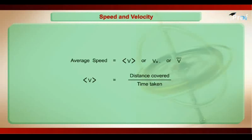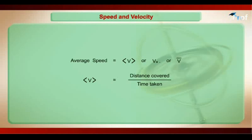The notations used for writing average speed are V_average, or with an overbar. Average speed is equal to distance covered by your body divided by time interval. Whenever average speed needs to be defined, time interval needs to be defined simultaneously, because in different time intervals, the speed of your body may be different.